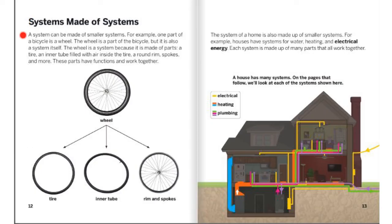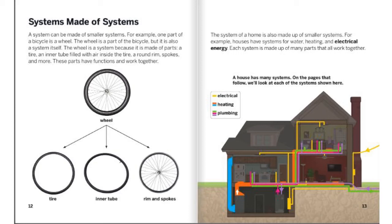Systems made of systems. A system can be made of smaller systems. For example, one part of a bicycle is a wheel. The wheel is part of the bicycle, but it is also a system itself. The wheel is a system because it is made of parts: a tire, the inner tube with air inside the tire, a round rim and spokes, and more. These parts have functions and work together. The system of a home is also made up of smaller systems. For example, houses have systems for water, heating, and electrical energy. Each system is made up of many parts that all work together.